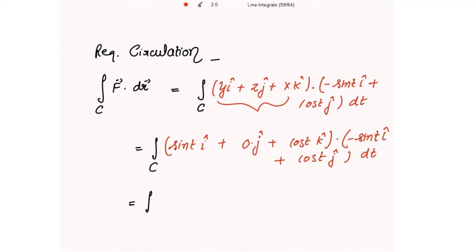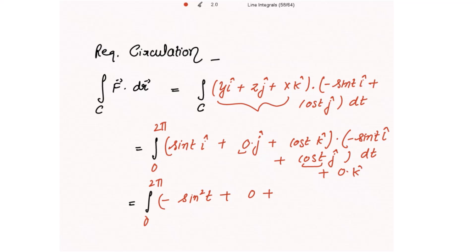Because everything is in t, we write the limits for t. Since it is a circle, the limits of t are from 0 to 2π. Taking the dot product: î·î = 1 gives -sin²(t); ĵ·ĵ = 1 but the z component is 0, so that term is 0. There is no k̂ vector in dr, so that is also 0. The result is the integral from 0 to 2π of -sin²(t) dt.